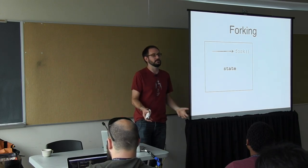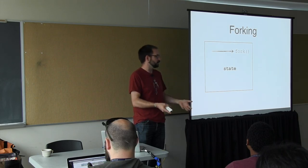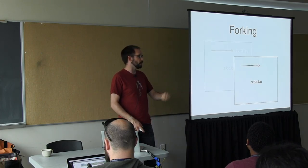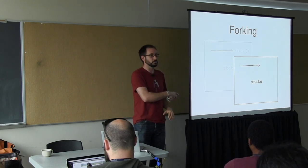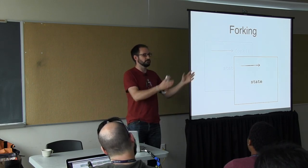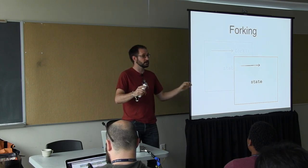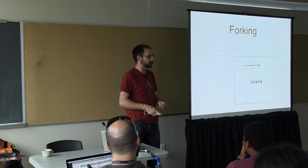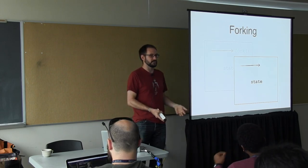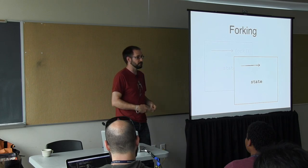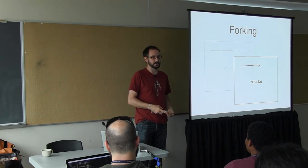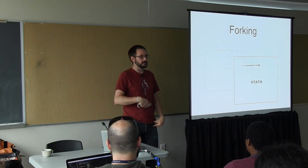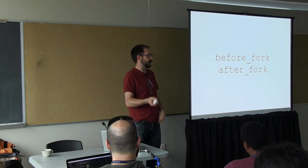Just to make sure we're all on the same page about forking: imagine a process as a box and the arrow is a thread executing. When we call the fork method on one of those threads, the operating system makes a brand new process with a different process ID, but otherwise the state of the world in that new child process is identical to the parent. Execution in both the parent and the child continues on from that point where we called fork. It gives a little bit of information back so you can tell whether you're in the parent or the child. The operating system does some great things under the covers to make this very lightweight, and this is a very common way to spin up new workers within your web server — Unicorn takes that sort of approach.